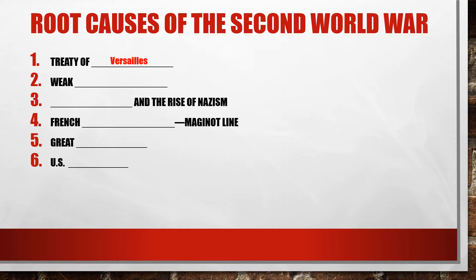Number one: the Treaty of Versailles and how it completely mistreated Germany, blaming Germany for the brunt of the Great War and forcing them to pay 33 billion dollars in reparations — which they never paid, it was not possible. Number two: the League of Nations, extremely weak. The number one reason is because the US isn't in it, even though US president Woodrow Wilson created it. The US never joined it, and it has no real teeth — no military force — dominated by Britain and France.